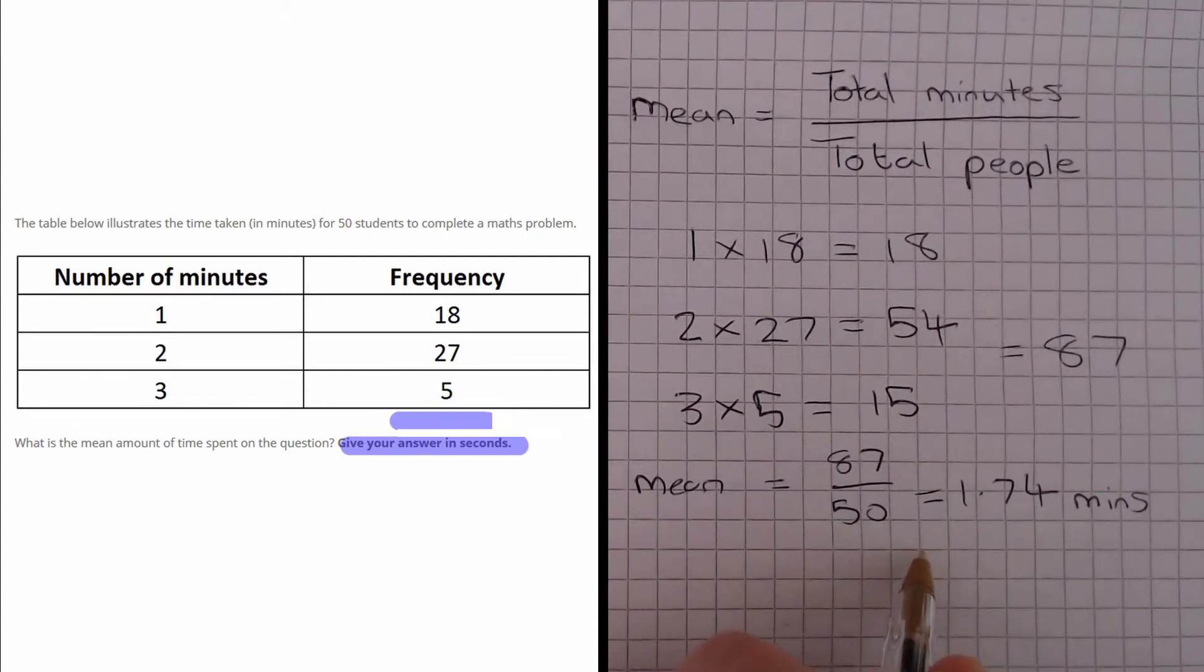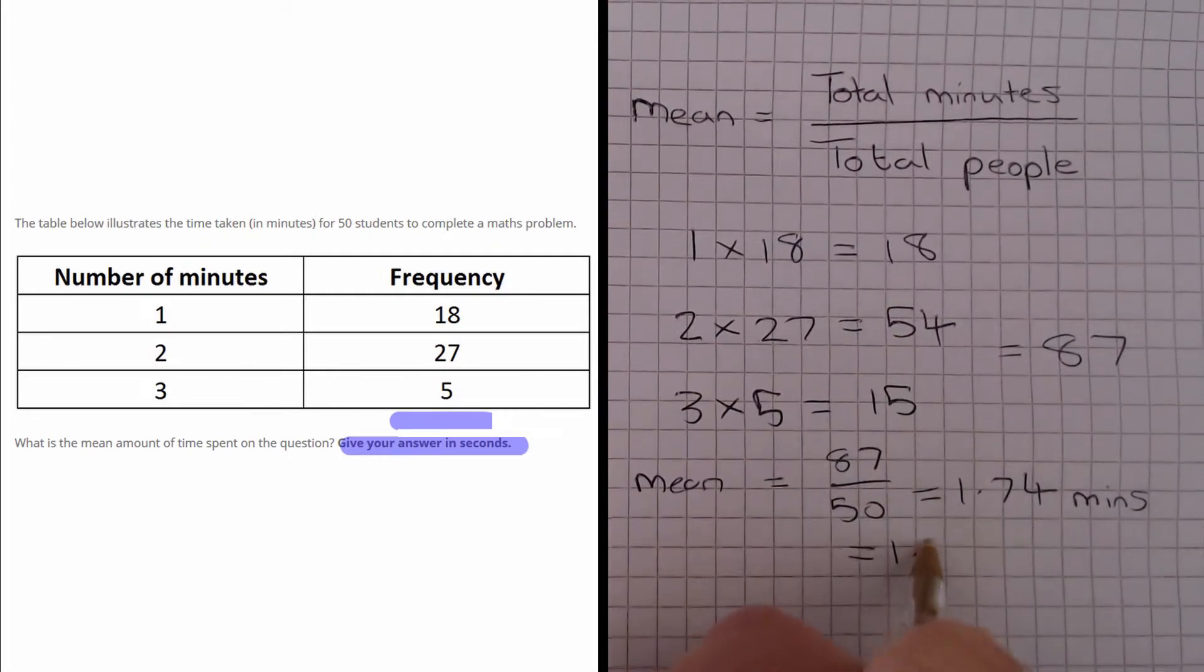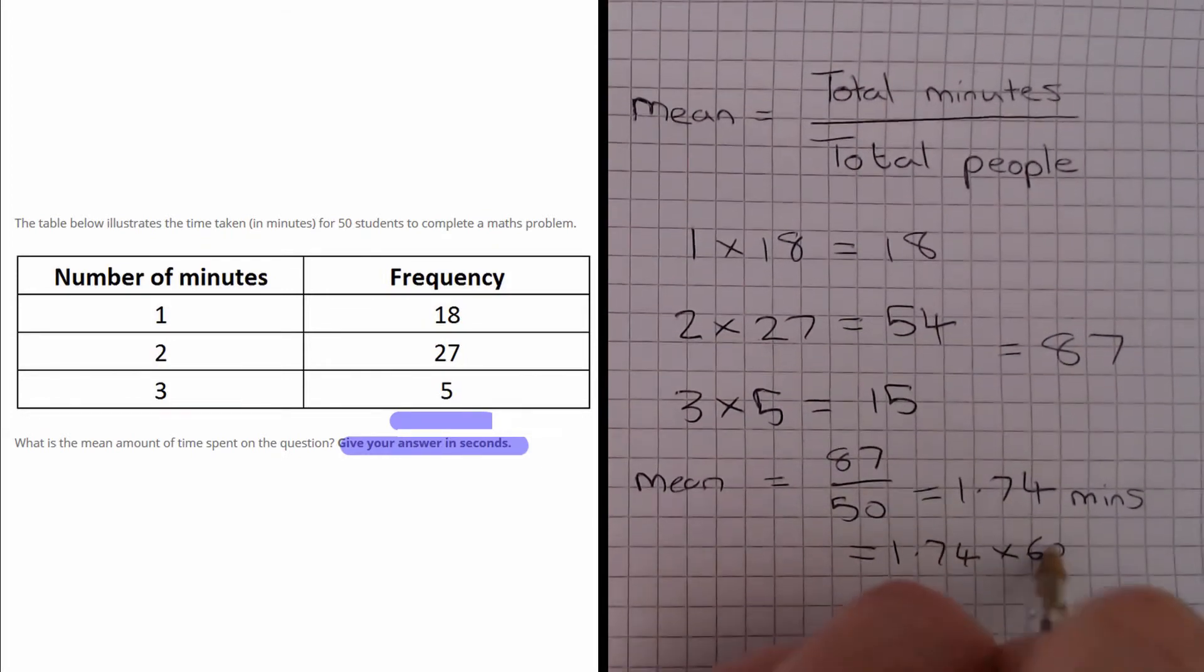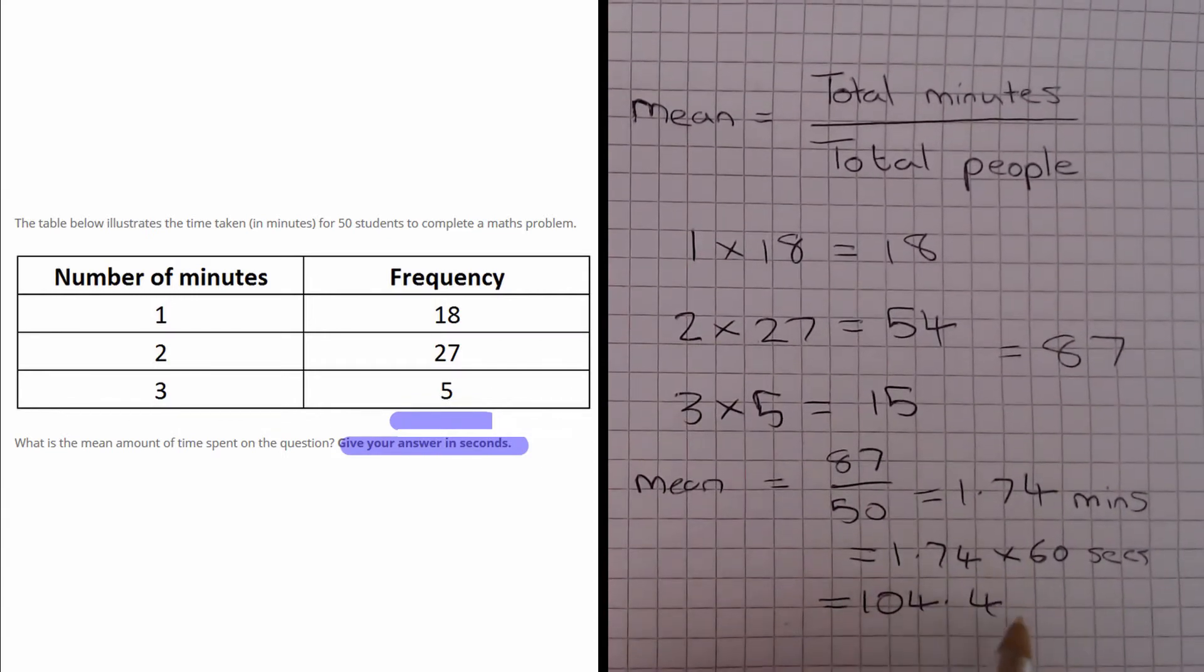So what we need to do is multiply this by 60. So 1.74 minutes is the same as 1.74 times by 60 seconds, which equals 104.4 seconds.